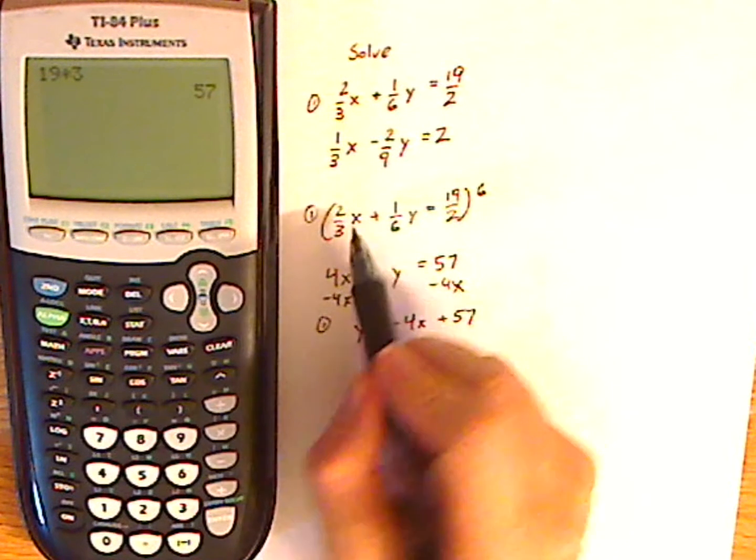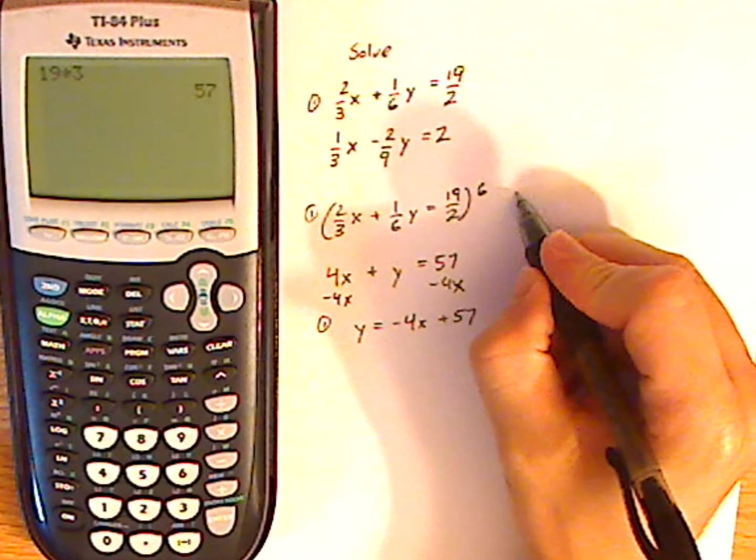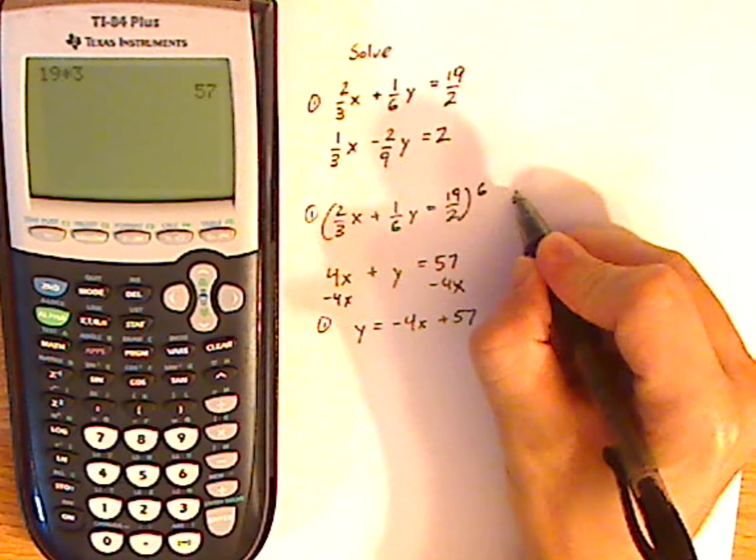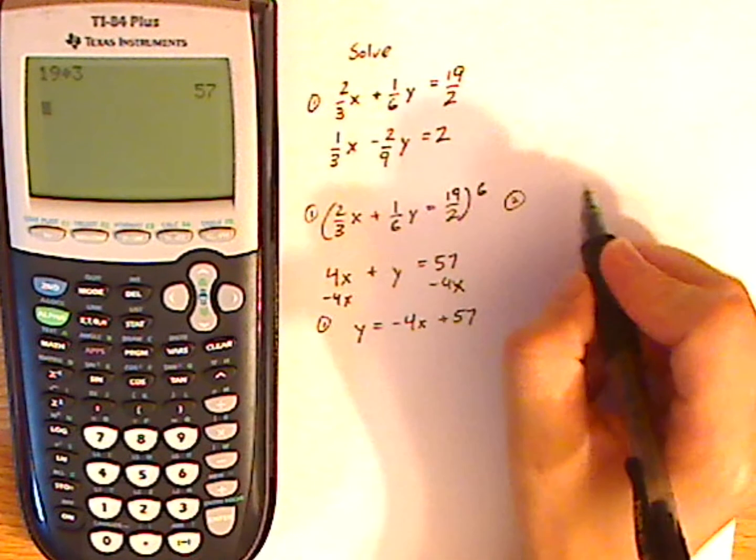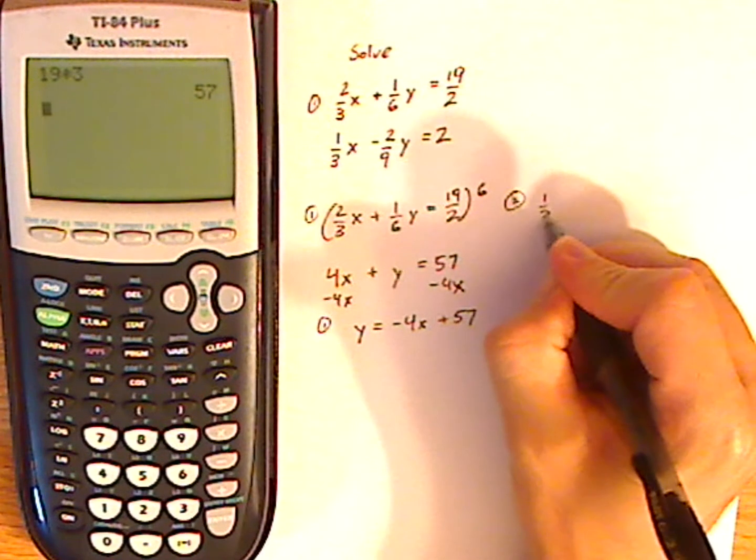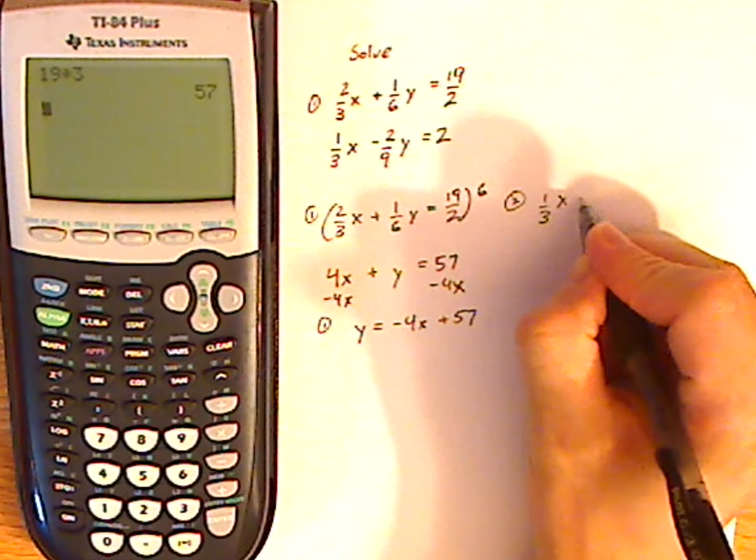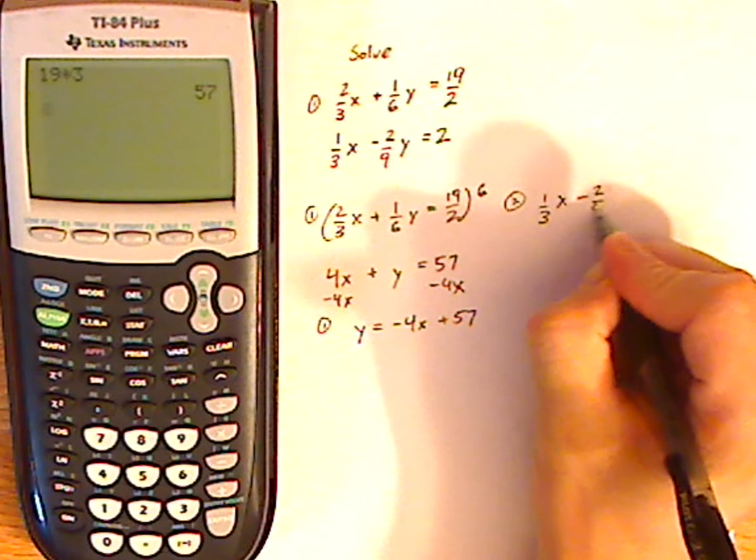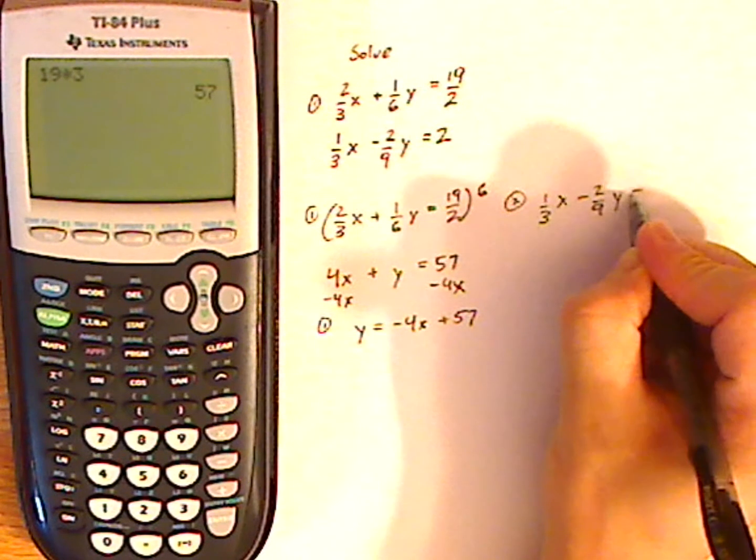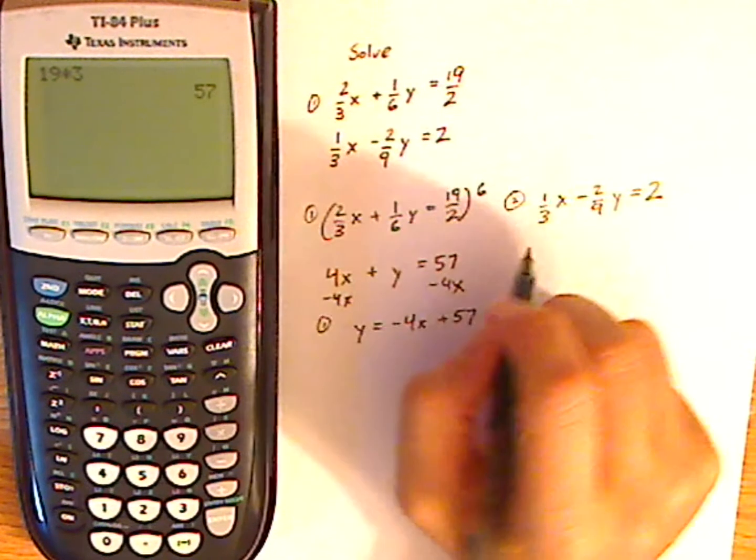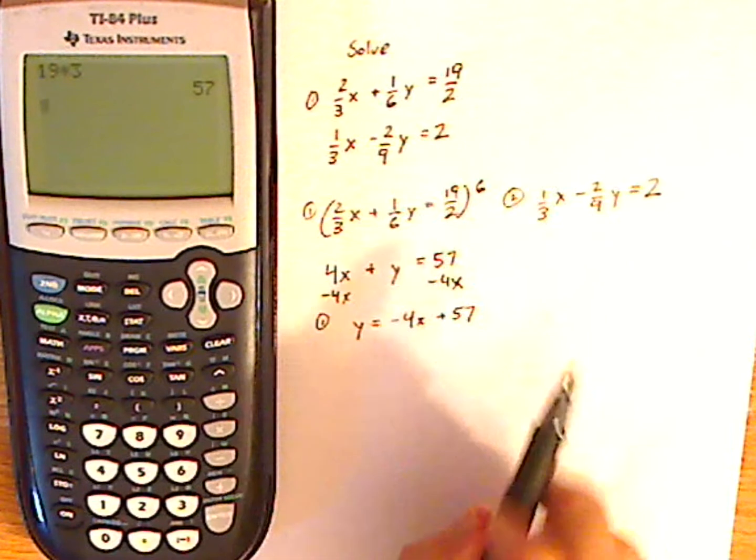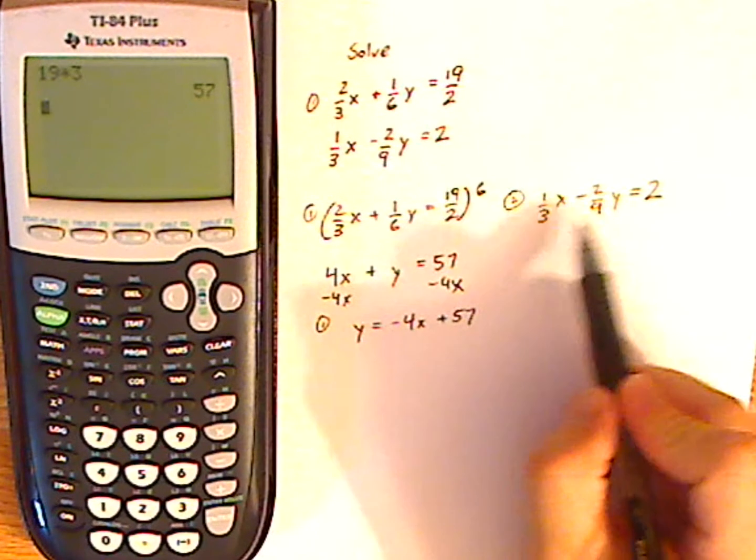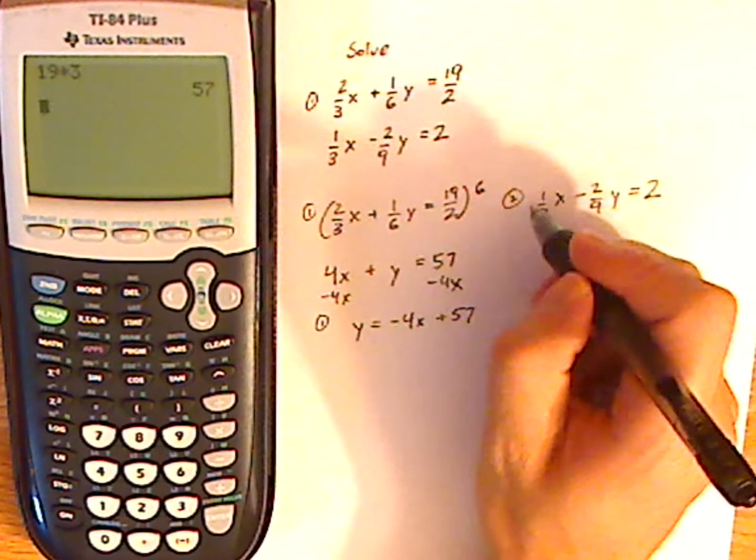For my second equation, let me rewrite it here. So I have 1/3x - 2/9y = 2. Take the LCD of 3 and 9, so that would be 9.